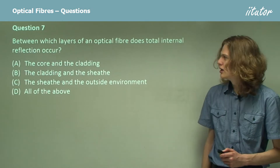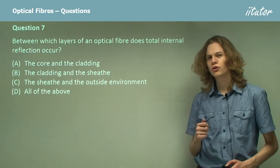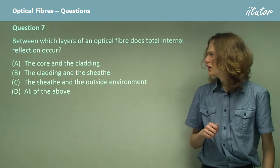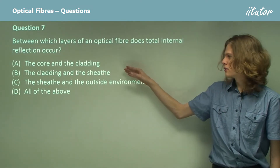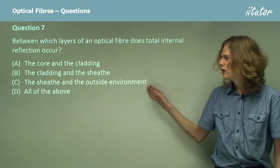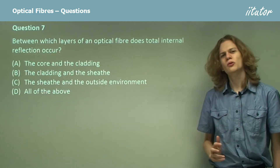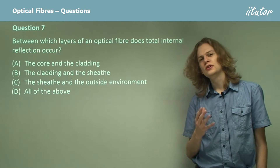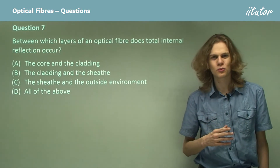Question 7. Between which layers of an optical fiber does total internal reflection occur? Is it the core and the cladding, the cladding and the sheath, the sheath and the outside environment, or all of the above? I'll give you a clue — it's not all of the above, and the reasons for this will become clear as we go through the other options.